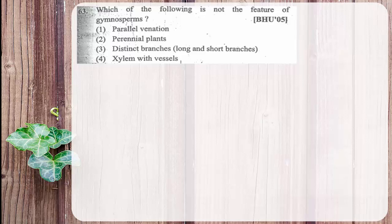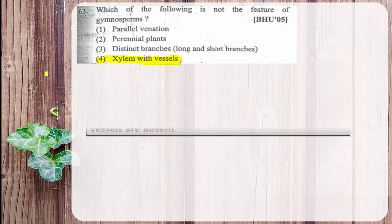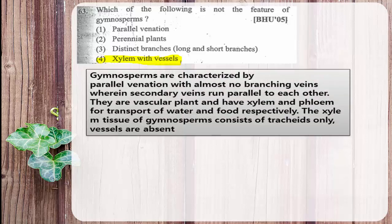The features of gymnosperms are given as options. Gymnosperms have parallel venation, they are perennial plants, and they show distinct branches. But the one feature completely absent in gymnosperms is xylem with vessels. Vessels are present in the xylem of angiosperms, not gymnosperms. So the right answer is option 4 — presence of vessels is a character of angiosperms.